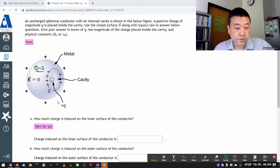A positive charge of magnitude Q is placed inside the cavity. Give your answer in terms of Q and the physical constants. How much charge is induced on the inner surface of the conductor?